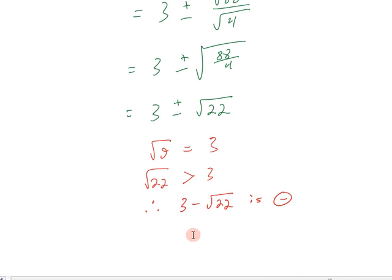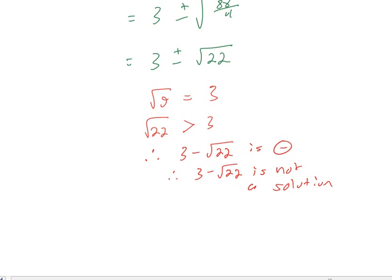And we can't have a negative length. Therefore, 3 minus the square root of 22 is not a solution. Leaving just one answer, 3 plus the square root of 22 is equal to the unknown side, x.